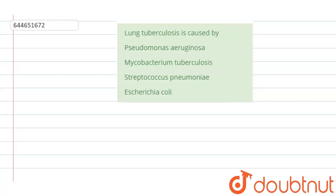The question given here is: lung tuberculosis is caused by — the first option is Pseudomonas aeruginosa, the second option is Mycobacterium tuberculosis, the third option is Streptococcus pneumoniae, and the fourth option is Escherichia coli.